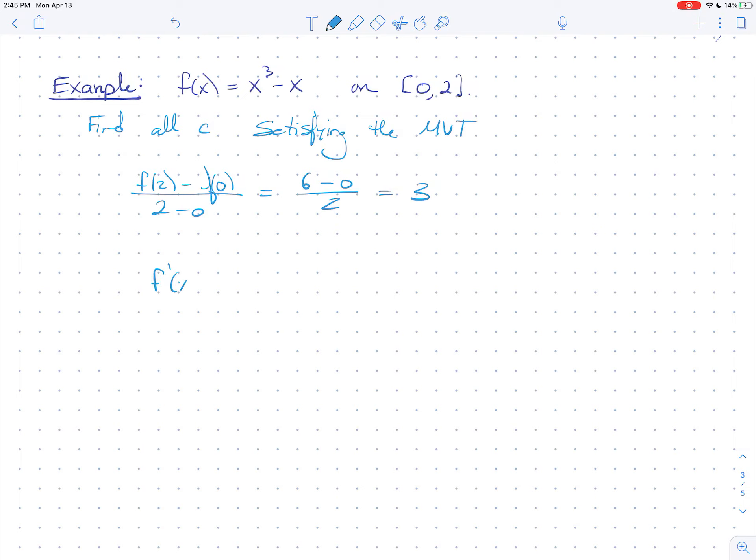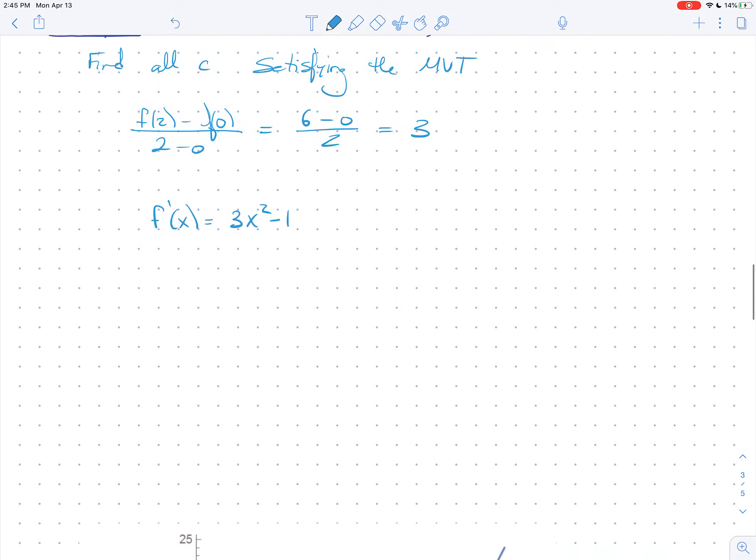And now we're going to take the derivative and we're going to get f'(x) is 3x² - 1. And so if you want to just set 3x² - 1 equals 3, that's fine.